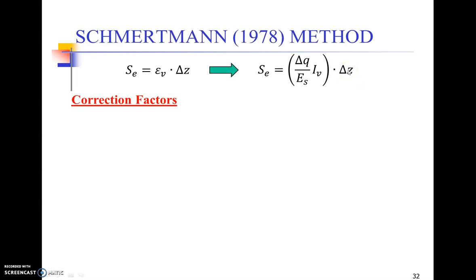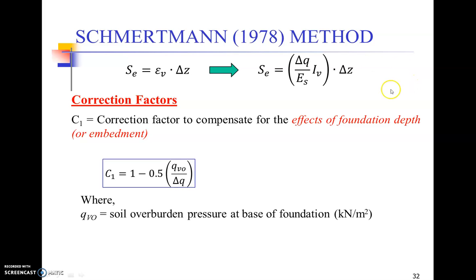There are certain correction factors that we need to use because when we are going into deeper depths, factors such as overburden pressure come into play. There is also another correction factor for time. When dealing especially with clays, time becomes very important. The first correction factor, C1, is to compensate for the effects of foundation depth or embedment. So σv0 is your soil overburden pressure at base of the foundation. Similarly, Δq is the change in pressure, contact pressure, due to construction of the structure.